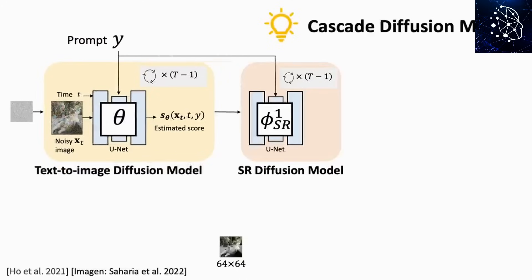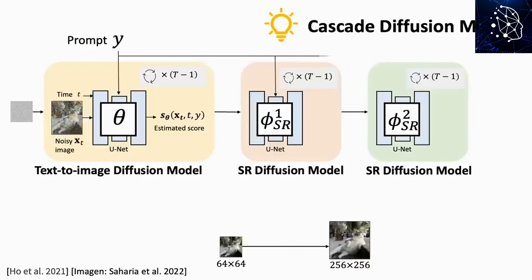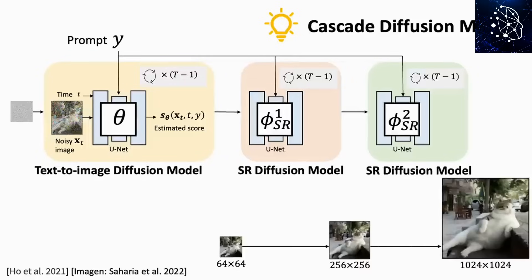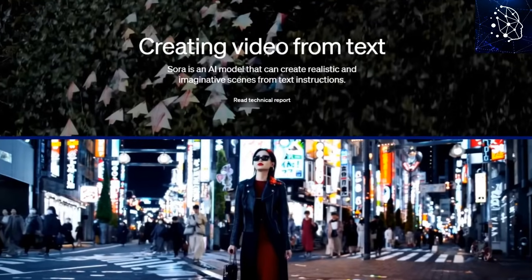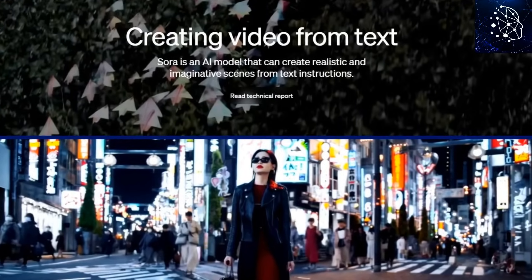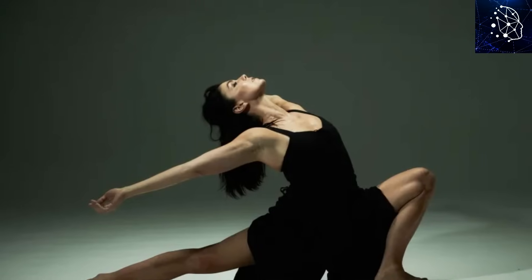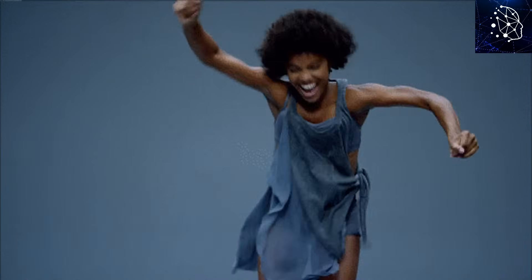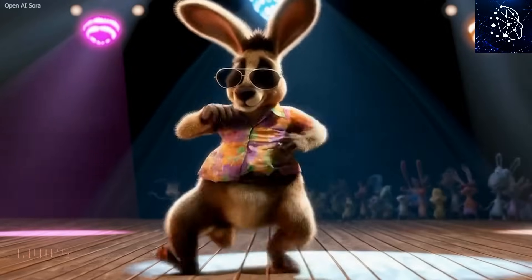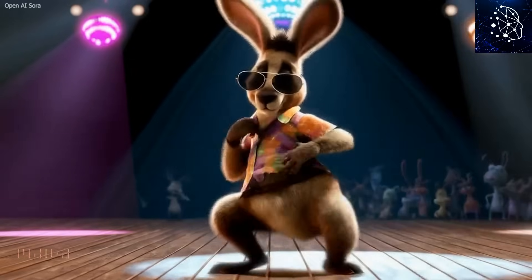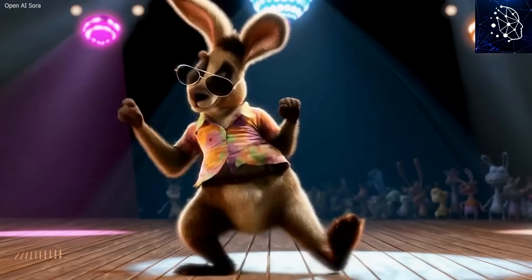Other models consider one image frame at a time, and as a result, the objects in the video are not consistent when they move in and out of view. However, Sora brings something new to the table by considering more than one image frame at a time. As a result, when an object moves in and out of view, it remains the same. For example, if Sora creates a video of a woman dancing, the size of her hands will not change when they move out of the shot. You just have a continuously flowing and consistent video without the quirks that characterize AI-generated visuals.